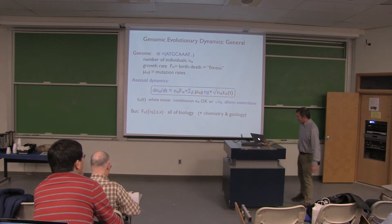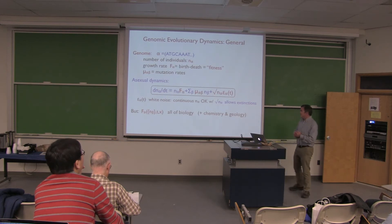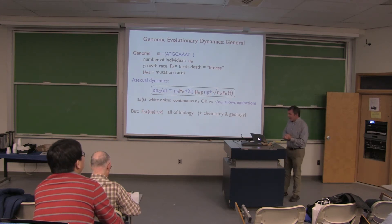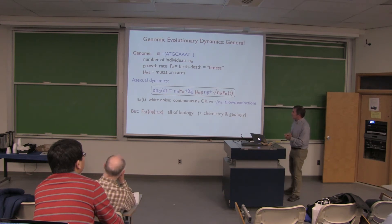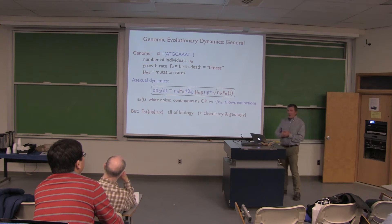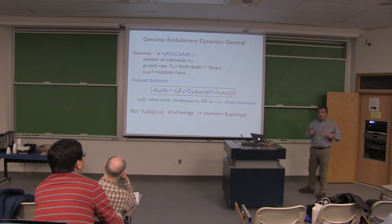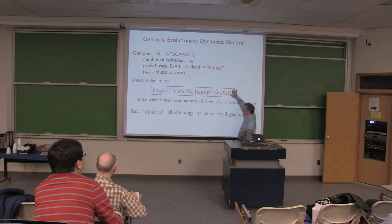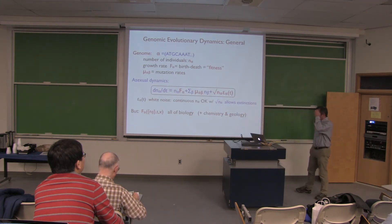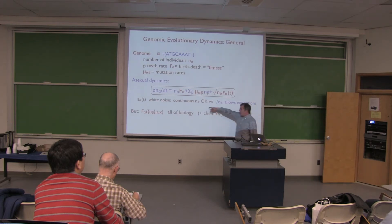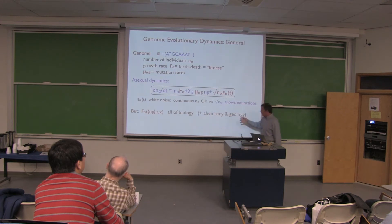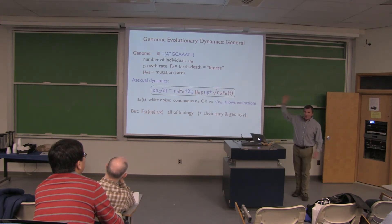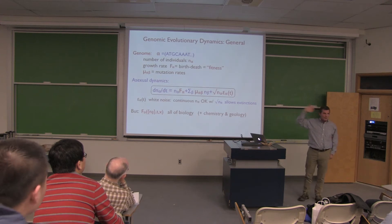Since I'm a theoretical physicist, I should show at least one slide with some honest equations. Looking at evolutionary dynamics: if I have a genome alpha with population number N-alpha and a fitness — the difference between birth and death rate — I have dynamics for the population growing exponentially with rate given by fitness. There are mutations giving rise to others, and fluctuations from birth and death. But the problem is this fitness depends on all the other populations around, on time, on space — so this is like many-body Schrödinger's equation. It's totally general but absolutely useless.